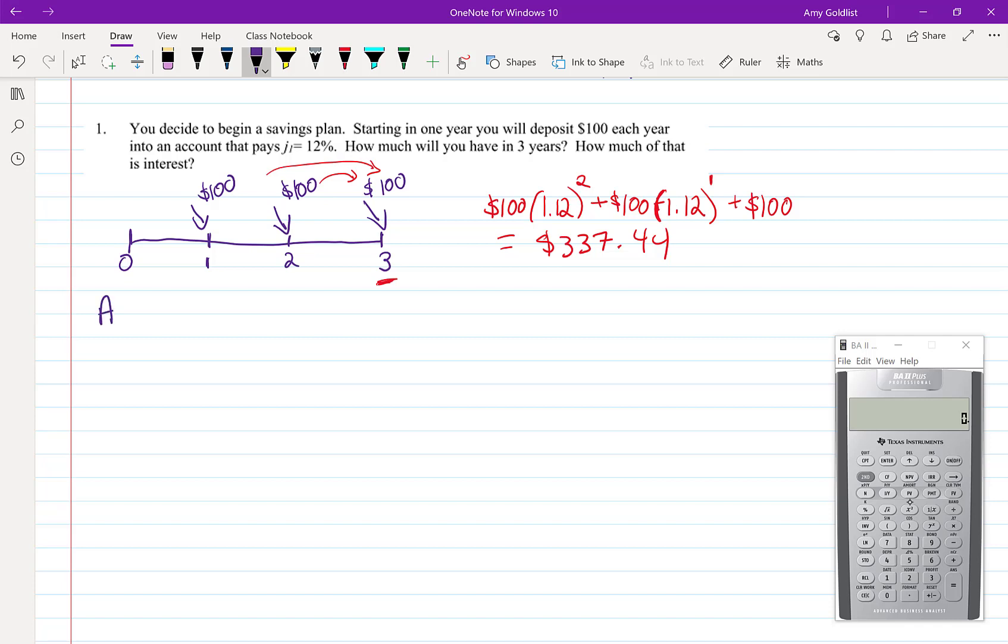So the first thing I want to look at is, are we accumulating or are we amortizing? So here, every year, I have a little bit more money. So I'm accumulating, and that's because the balance is growing.